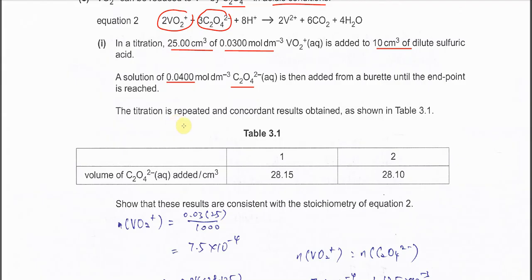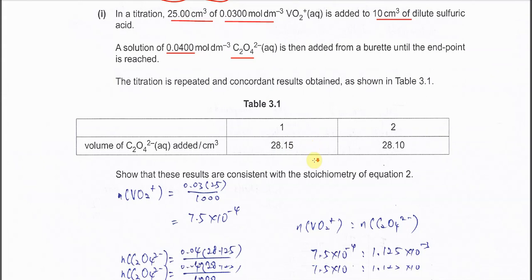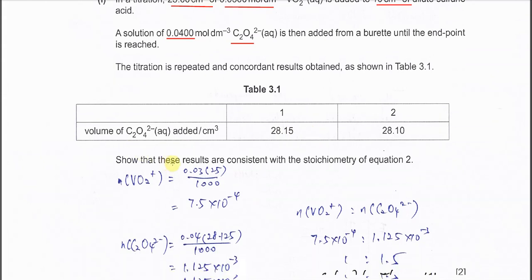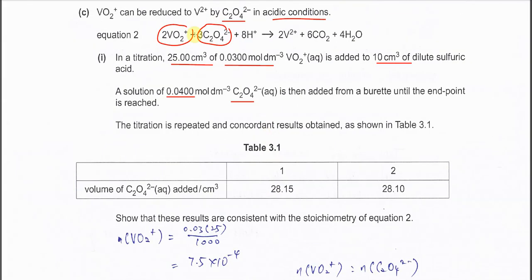And the titration repeated and the results obtained. So we have two titre values. Later just need to get the average and do the calculation. The question is: show that these results are consistent with the stoichiometry of equation 2, means 2 to 3 mole ratio between these two ions.